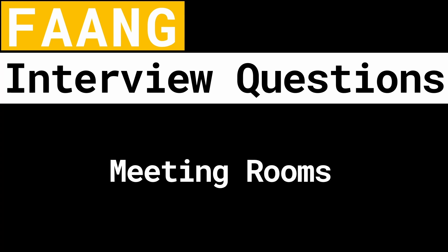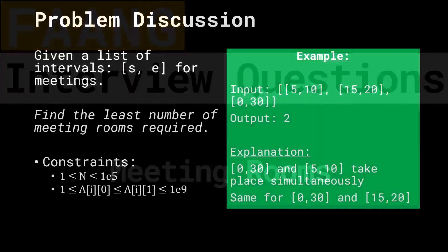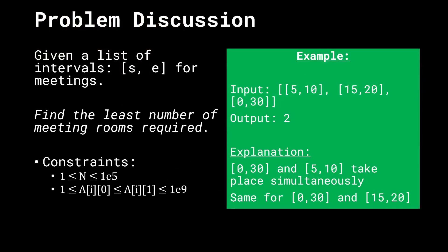Hello everybody and welcome back. Let's talk about the problem Meeting Rooms. We're given a list of intervals defined by their starting and ending times, and each of these intervals represents a single meeting. The goal of this problem is to find the least number of meeting rooms required to conduct all of the required meetings. The constraints mention that n, the number of meetings, can be between 1 and 10 to the power 5, and every single time can be between 1 and 10 to the power 9.